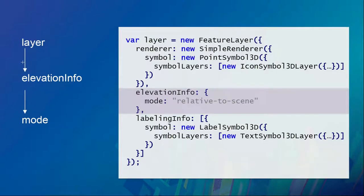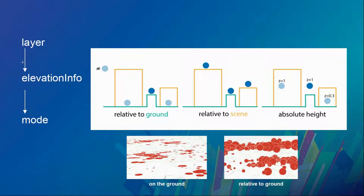An important property in 3D that lives on the layer is elevation info. The mode on the elevation info has several options: 'relative to ground' aligns your features to the terrain; 'relative to scene' aligns to building scene layers or integrated mesh, whichever is higher; 'absolute height' uses set values baked into the geometry, so you could have points inside a building if the value is below the maximum building height.